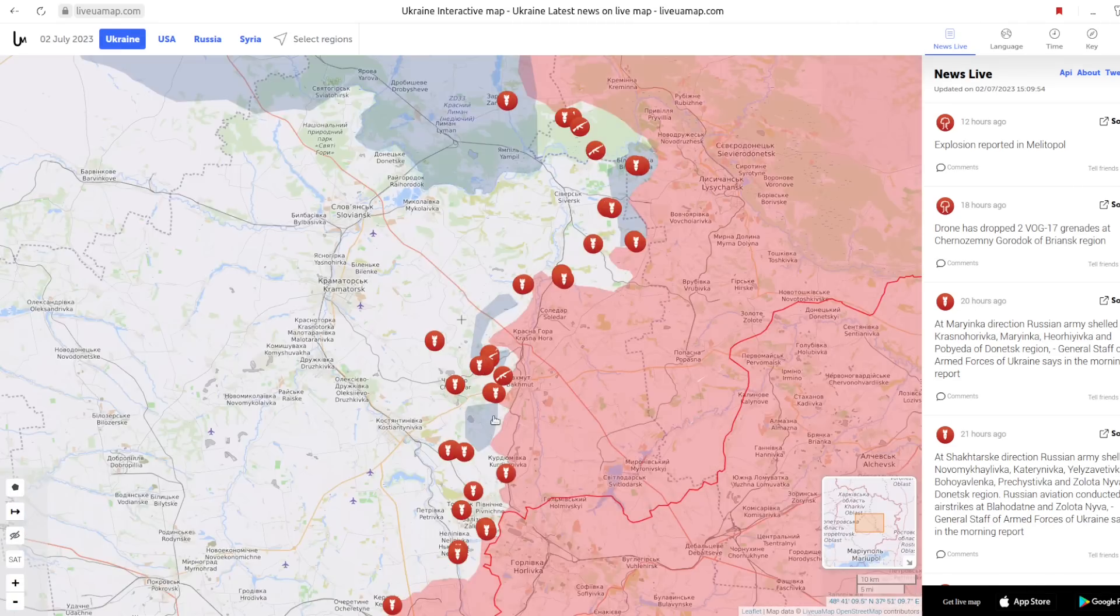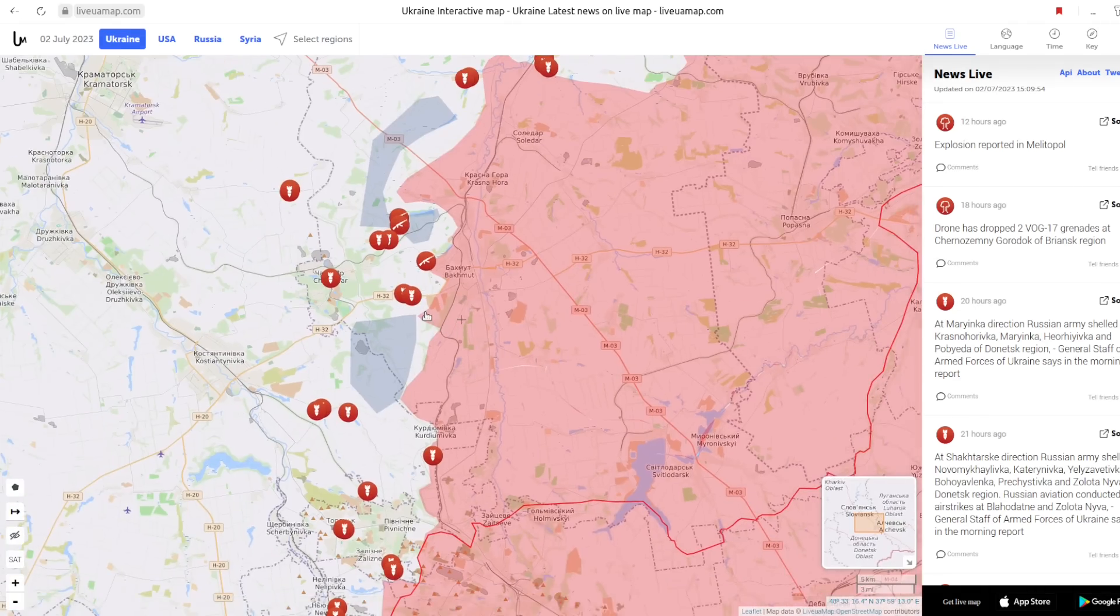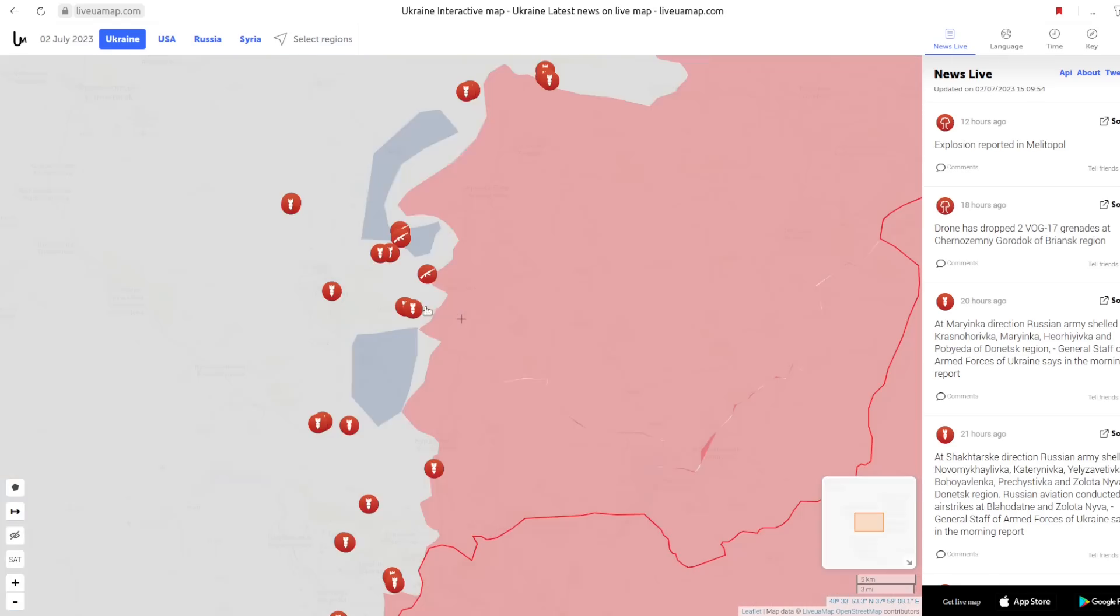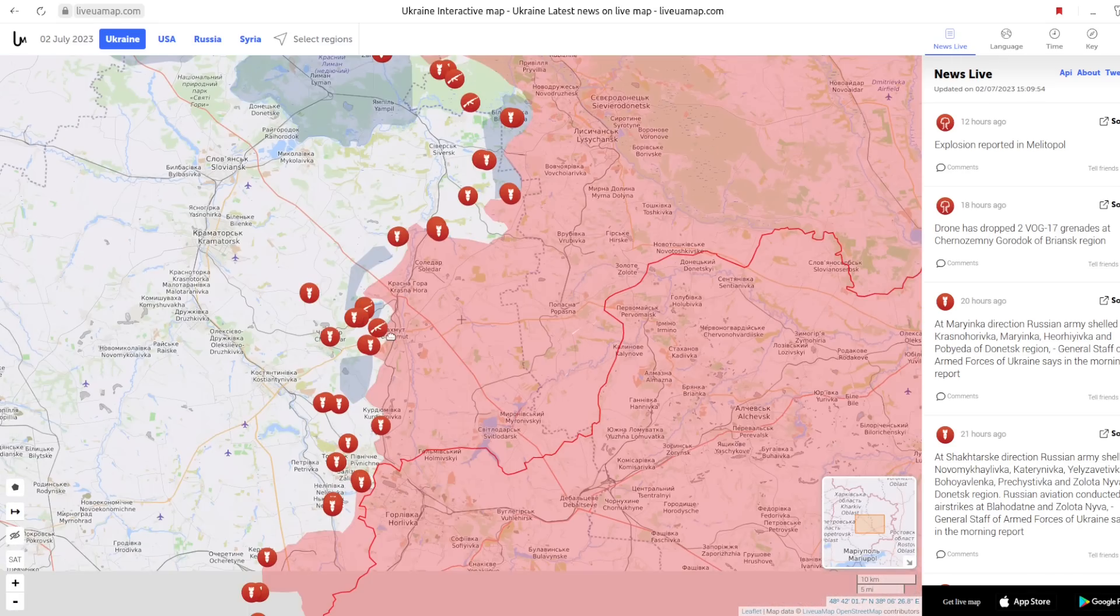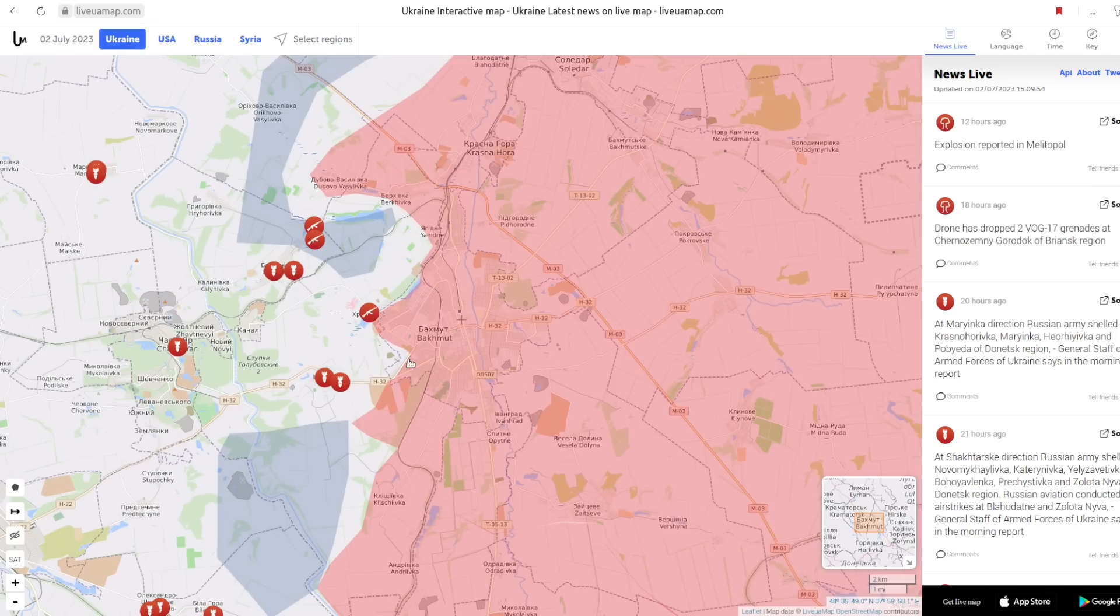If we go to the Donbass region, we see Ukrainian forces fighting around Bakhmut and Seversk. But again, the progress has been minimal, and Bakhmut still remains under Russian control. I will talk more about Bakhmut a little bit later.